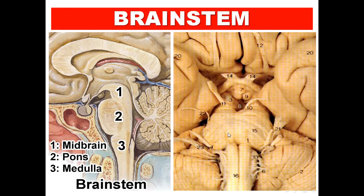This is the brain stem — midbrain, pons, and medulla. The upper part is the midbrain, the middle part is the pons, and the lower part is the medulla. This cavity, behind the pons and in front of the cerebellum, is the fourth ventricle.